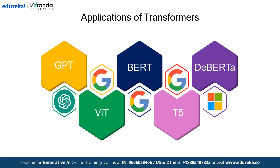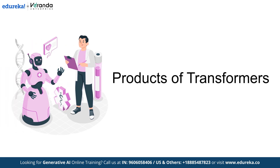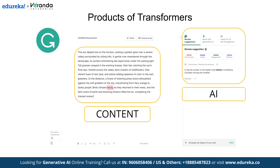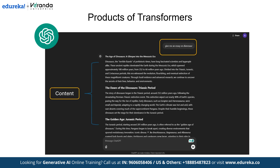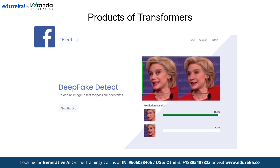These models demonstrate the versatility and impact of transformer architecture across various domains. Transformers have become an integral part of many real-world products that we use daily. Examples include Grammarly, which leverages transformers for advanced grammar and writing assistance; Google Search and its translation tools, powered by models like BERT and T5; and ChatGPT, OpenAI's conversational AI that relies on the generative pre-trained transformer architecture. Additionally, Meta's deepfake detector uses transformer-based models for facial recognition tasks. These applications highlight how transformers have revolutionized technology, seamlessly integrating into tools that enhance our everyday lives.